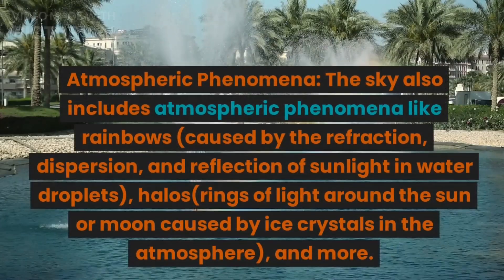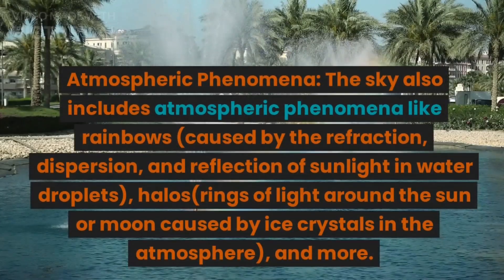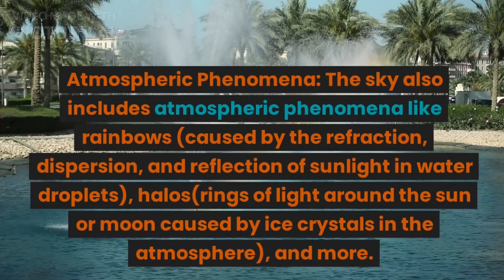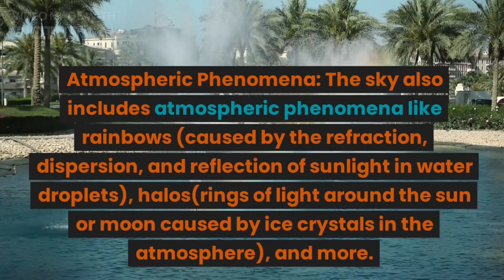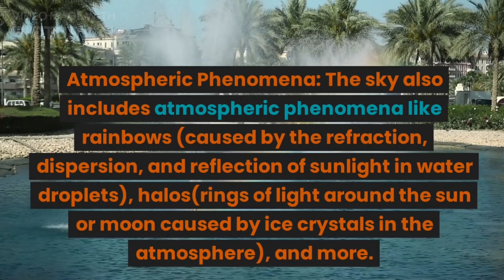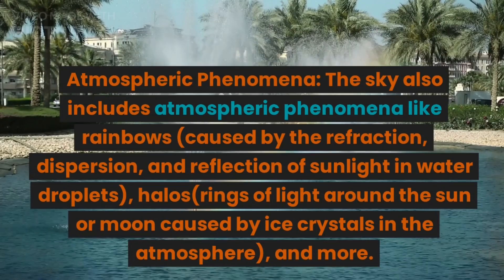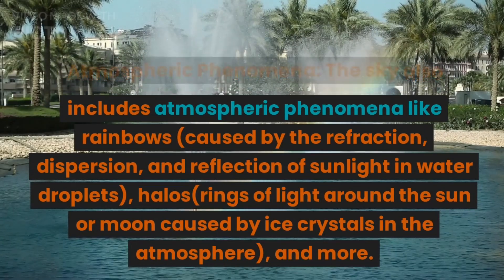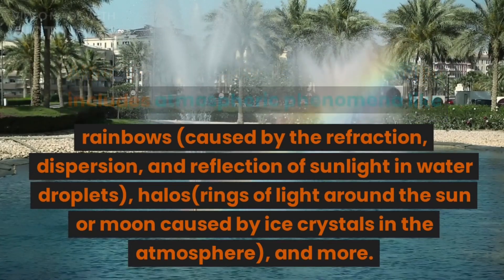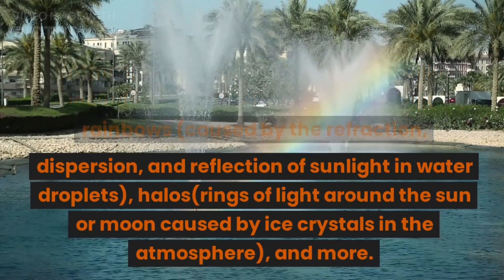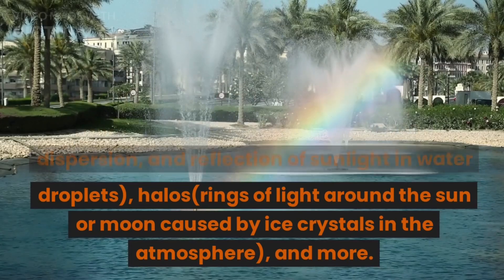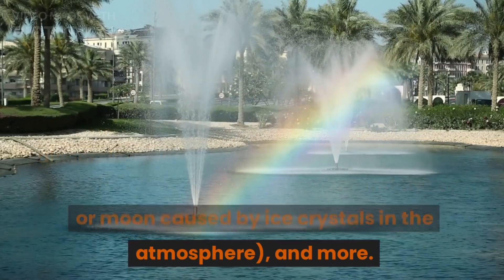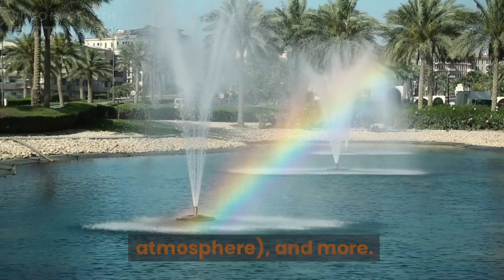Atmospheric Phenomena. The sky also includes atmospheric phenomena like rainbows, caused by the refraction, dispersion, and reflection of sunlight in water droplets; halos, rings of light around the sun or moon caused by ice crystals in the atmosphere; and more.